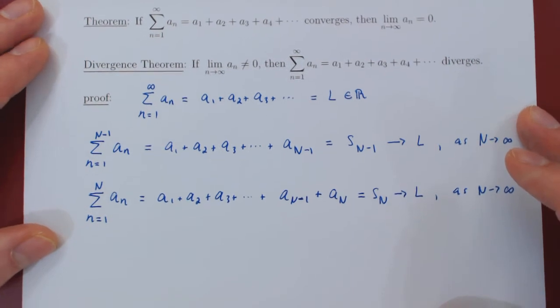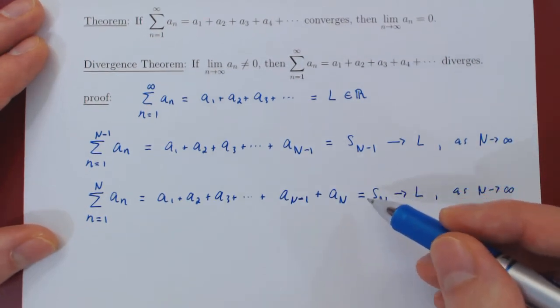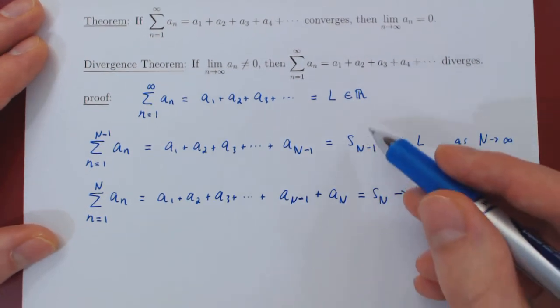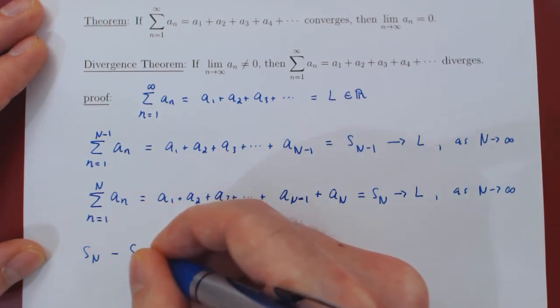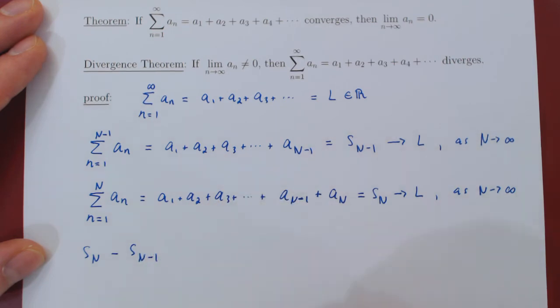And now the idea is to simply subtract from this partial sum, this one. So we consider now S sub N minus S sub N minus 1.